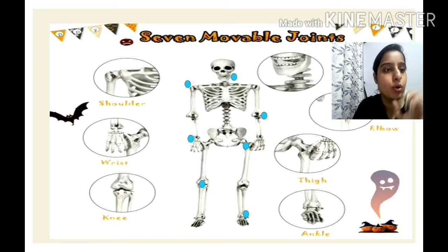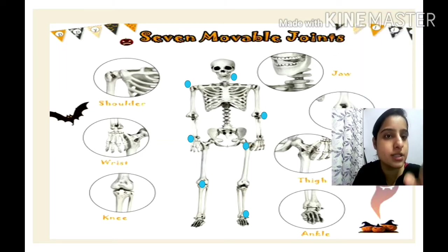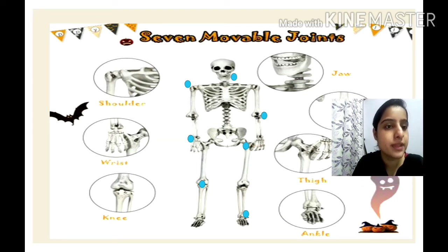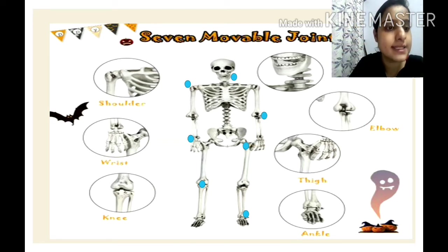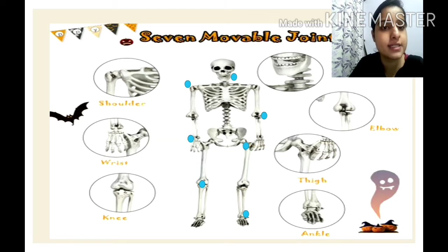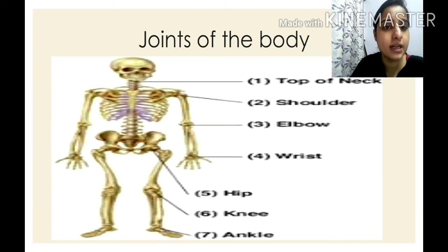You know that bones are hard. We can move, dance, walk, and do any work. This is possible with the help of seven movable joints in our body. These are: jaw, elbow, thigh, ankle, knee, wrist, and shoulders. These movable joints allow us to move our body, walk, and dance — whatever we want to do.